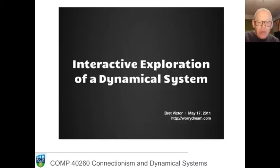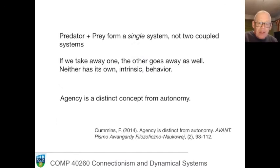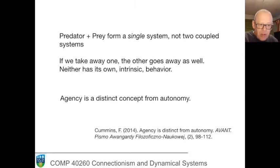What a remarkable system that person built. We need these kinds of intuitive forms of interacting with our models to really understand what they do. This particular example is very important from our point of view because predator and prey form a single system — neither has an endogenous behavior. If you take one away, the other goes to zero. So there's no autonomy here, except for the system as a whole.